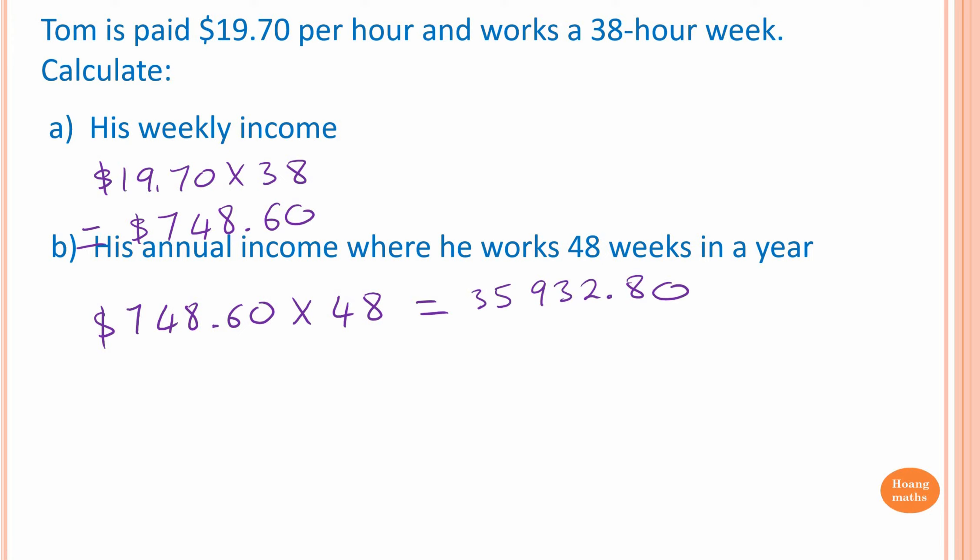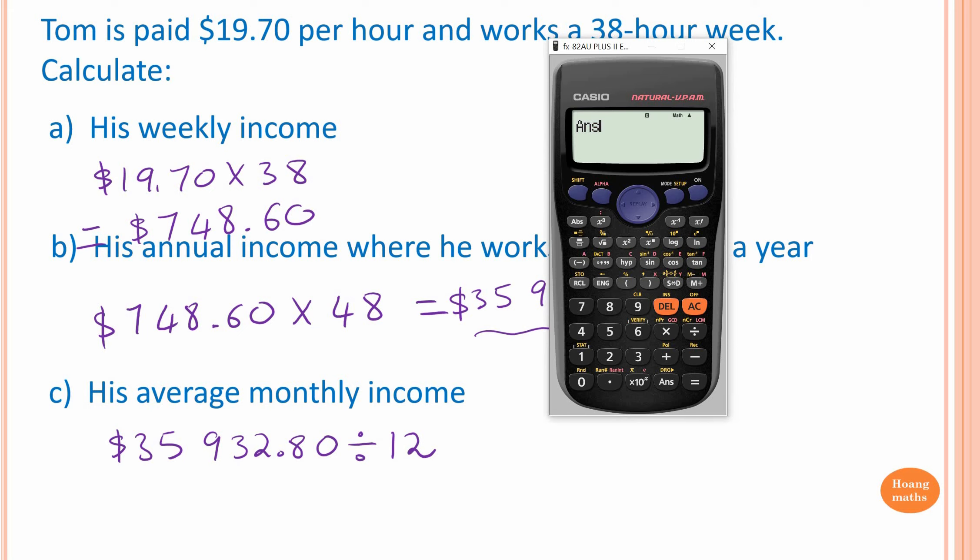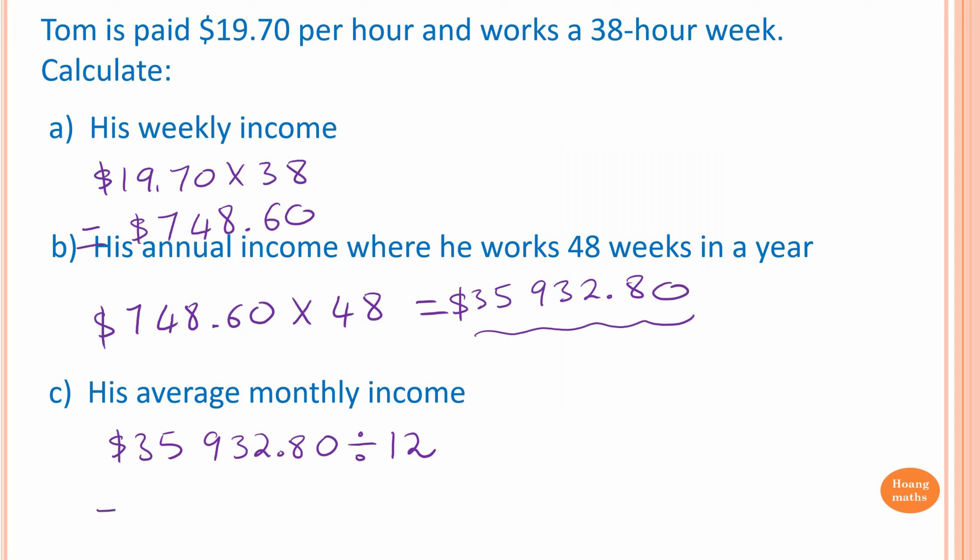Last one, calculate his average monthly income. So we know each year Tom earns this much. So what we do, we just divide this by 12. So $35,932.80 divided by 12. So I just go answer divided by 12, $2,994.40, which equals $2,994.40.